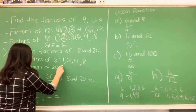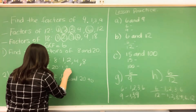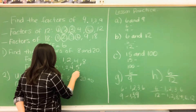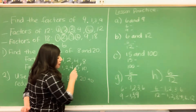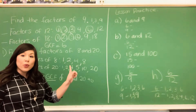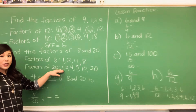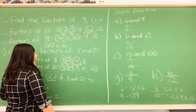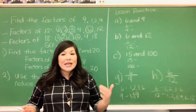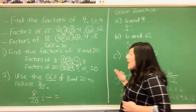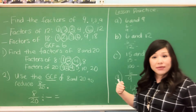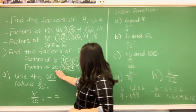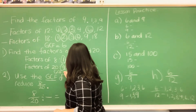The factors of 20 are: of course number 1 is always a factor, then 2, 4, 5, 10, and 20. Now let's go through and circle the common factors — the numbers that both of these have in common. They have 1 in common, 2 in common, and 4 in common. That's it. So the greatest common factor — the GCF — is the number 4. The GCF for 8 and 20 is 4.